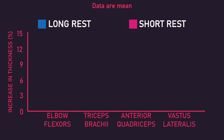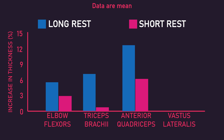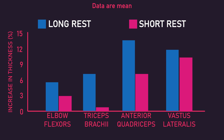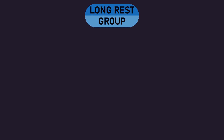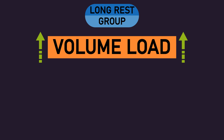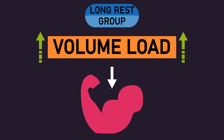By the end of the study, increases in growth measurements for the elbow flexors, triceps brachii, anterior quadriceps, and vastus lateralis favored the long rest group. Therefore, as the long rest group performed higher volume loads and experienced greater muscle growth, the results would lead you to assume higher volume loads drive more muscle hypertrophy.